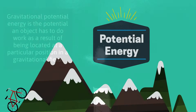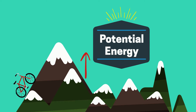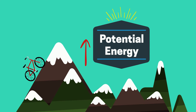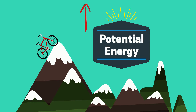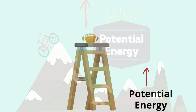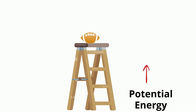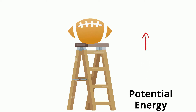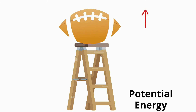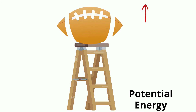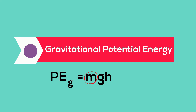As an object like this bicycle gets further off the ground, the potential energy increases. Potential energy also increases as the mass of an object increases. The formula for gravitational potential energy is equal to mass times acceleration due to gravity times the distance above a surface.